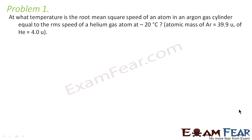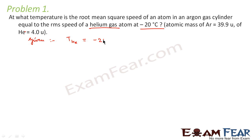The problem says: at what temperature is the root mean square speed of an atom in an argon gas cylinder equal to the RMS speed of a helium gas atom at minus 20 degrees Celsius? The atomic mass of argon is given as 39.9 units and that of helium is 4 units. The temperature for helium is minus 20 degrees Celsius, that is 253 Kelvin.